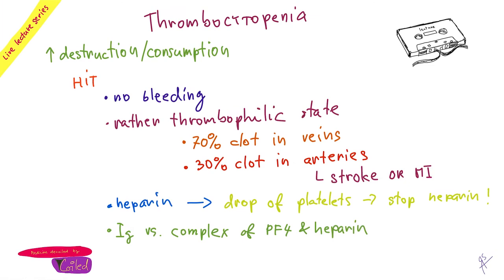One more comment on TTP: in TTP there is a selective decrease of platelets but coagulation cascade factors are normal — PT and APTT are typically normal. Mainly thrombocytes are activated through the von Willebrand factor, and clotting factors are not consumed too much. Remember this. ITP and TTP cause bleeding; HIT causes only clotting — in 30% in arteries, so you can have a stroke.